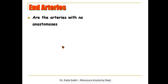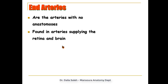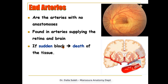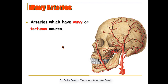End arteries are arteries with no anastomosis. They are found in arteries supplying the retina and the brain. Here the arteries end in capillaries, and the other side of the capillaries forms the veins, with no anastomosis between branches. If sudden blockage of these branches occurs, death of the tissue they supply will take place.